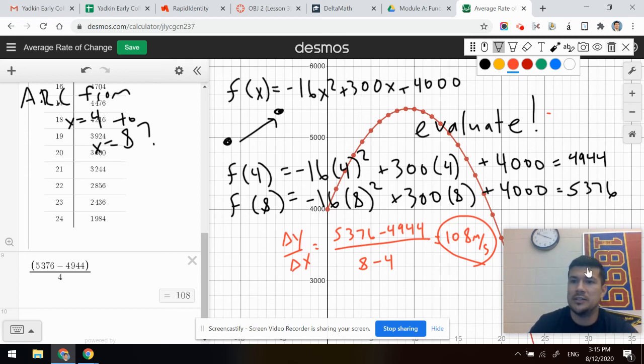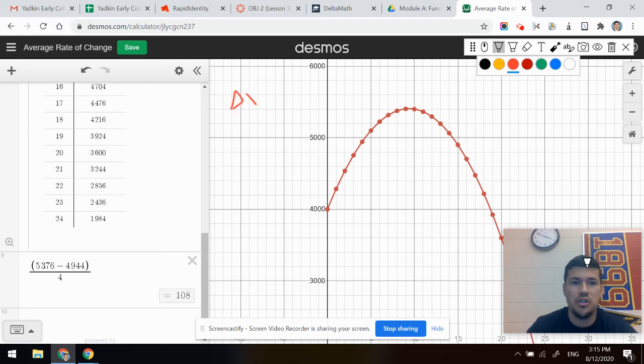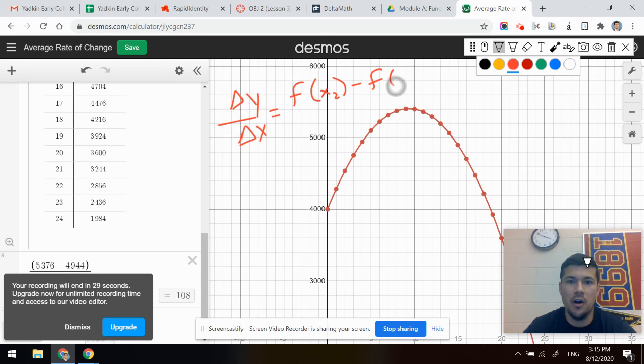We can make one last little simple formula, and that is that change in Y over change in X can also be written as F of X2 minus F of X1. That's what I did. I evaluated my second point and I subtracted my first point from it, divided by the difference between X2 and X1. So fancy little formula, really all we did was find the outputs, subtract them, and then divide by the difference in our inputs. Thank you so much. Let's do this.